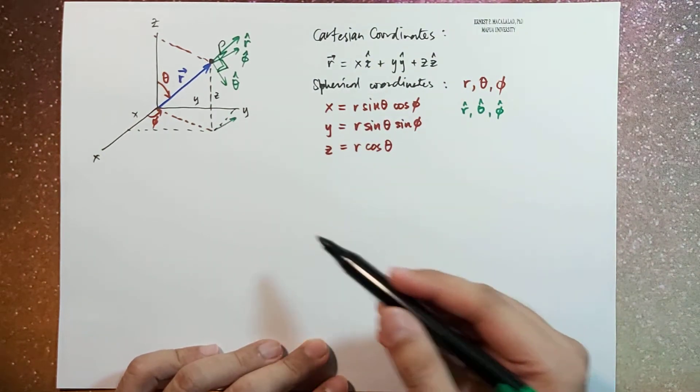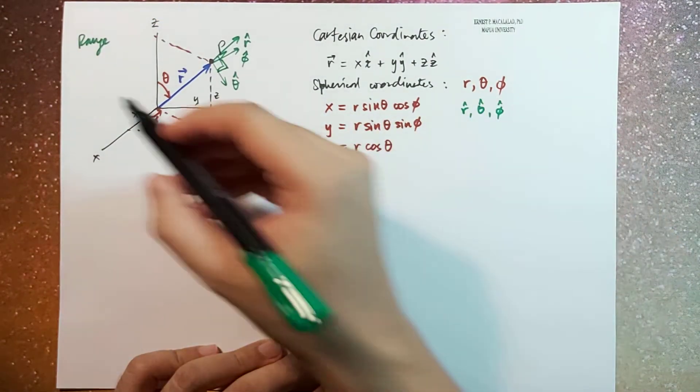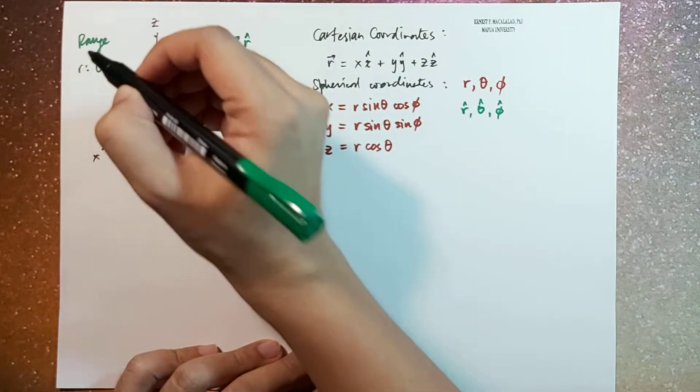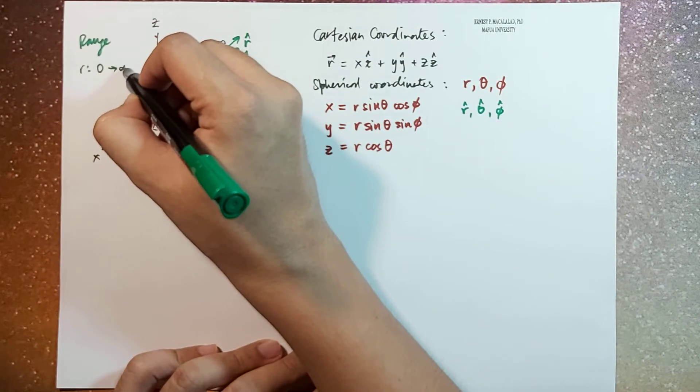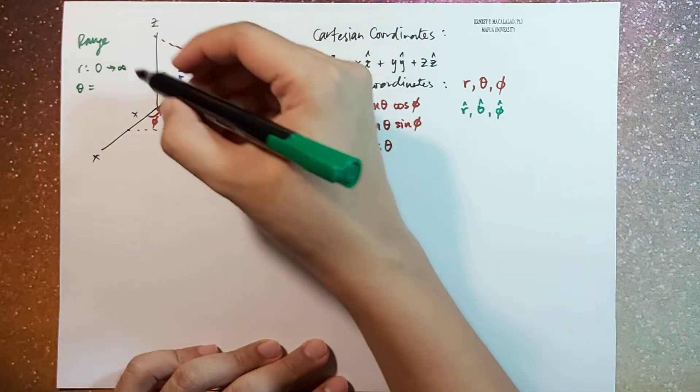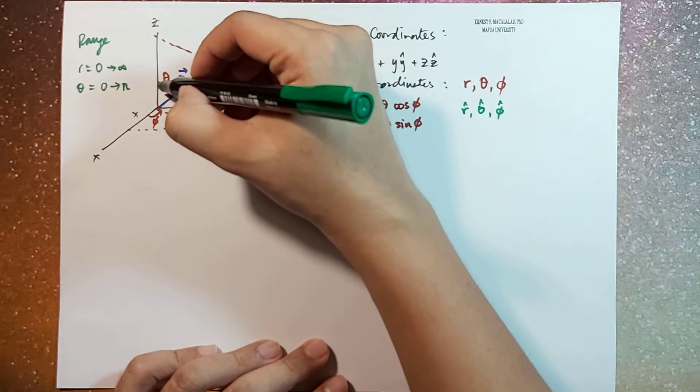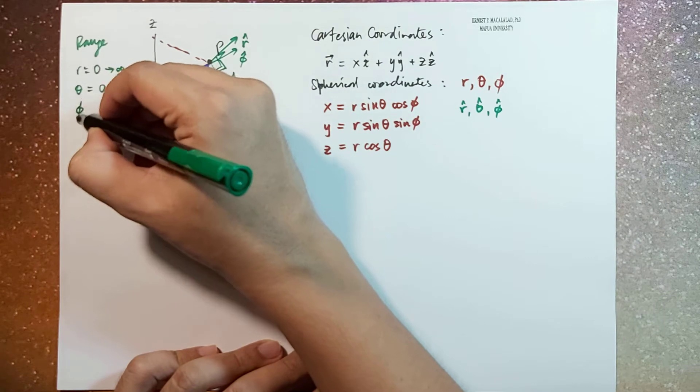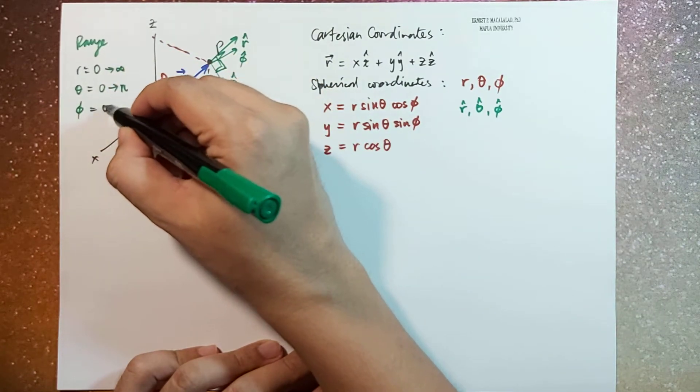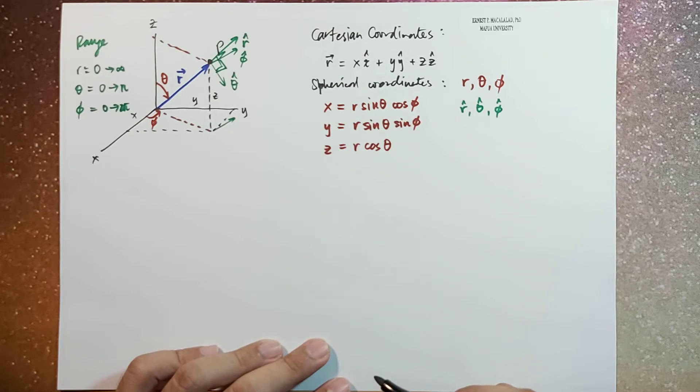Now also, the range of values of r, theta, and phi are: r would be from 0 to infinity, this is very important. Theta would be from 0 to pi, and phi is from 0 to 2 pi.